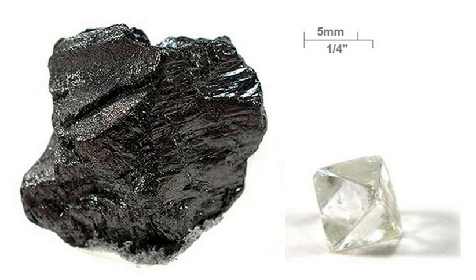Isotopes of carbon are atomic nuclei that contain six protons plus a number of neutrons. Carbon has two stable, naturally occurring isotopes. The isotope carbon-12 forms 98.93% of the carbon on Earth, while carbon-13 forms the remaining 1.07%. The concentration of 12C is further increased in biological materials because biochemical reactions discriminate against 13C. In 1961, the International Union of Pure and Applied Chemistry adopted the isotope carbon-12 as the basis for atomic weights. Identification of carbon in nuclear magnetic resonance experiments is done with the isotope 13C.